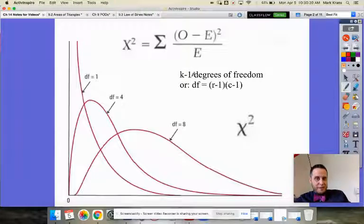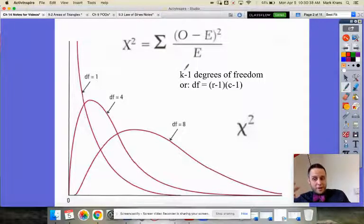And we have either K minus one degrees of freedom. So like when we're dealing with rolling a die, there's six different faces and the model that I expect is one-sixth on each face. There's six faces, so we have five degrees of freedom.